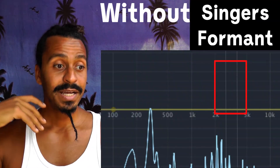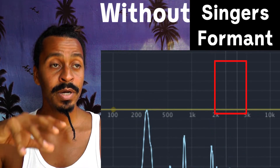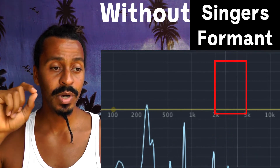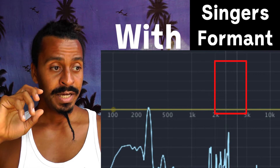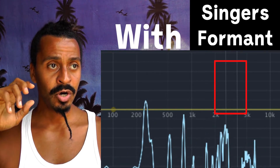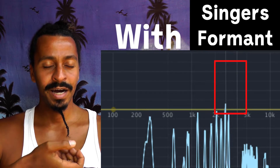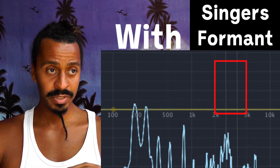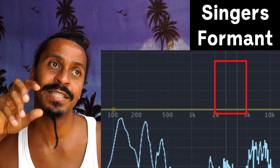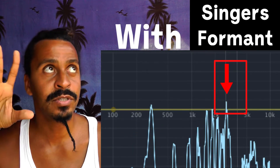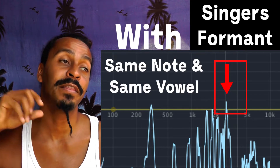First song — without the singer's formant. Now, with the singer's formant. You see how the overtone frequencies at around 3000 to 3200 hertz are raised more with the space opened rather than without it.